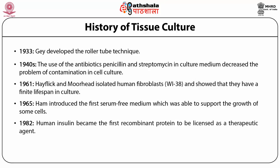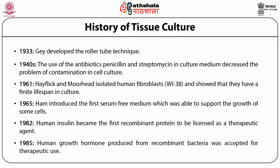In 1982, human insulin became the first recombinant protein to be licensed as a therapeutic agent. In 1985, human growth hormone produced from recombinant bacteria was accepted for therapeutic use.